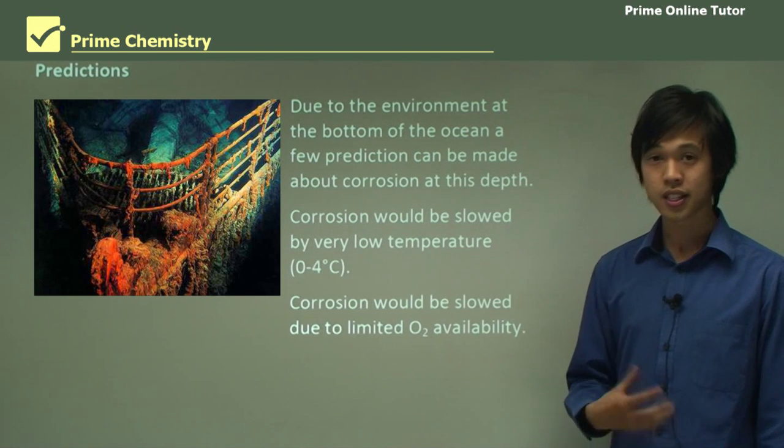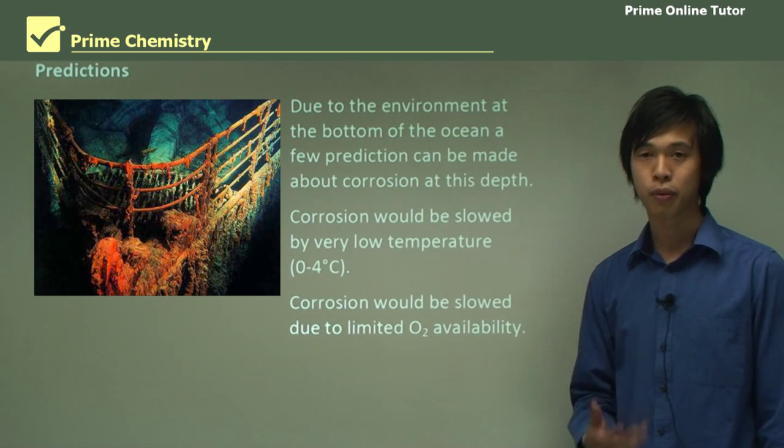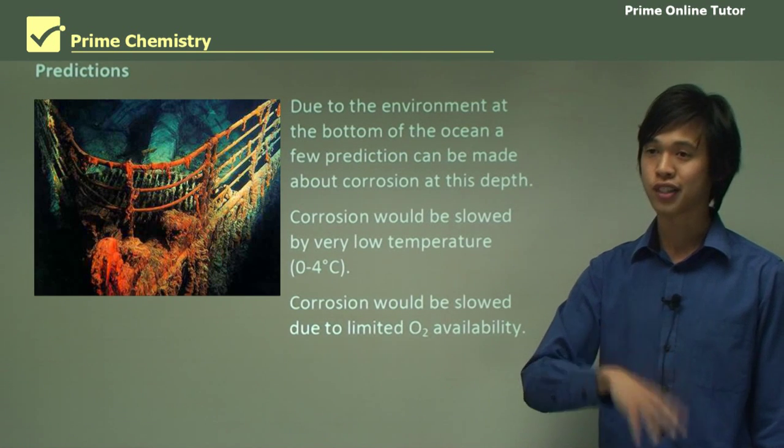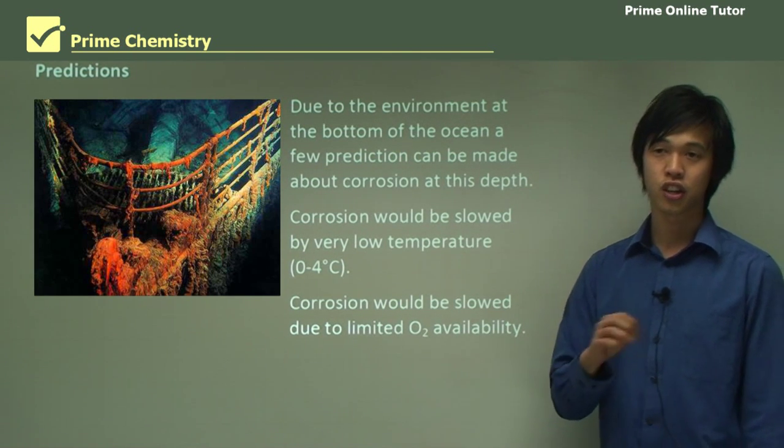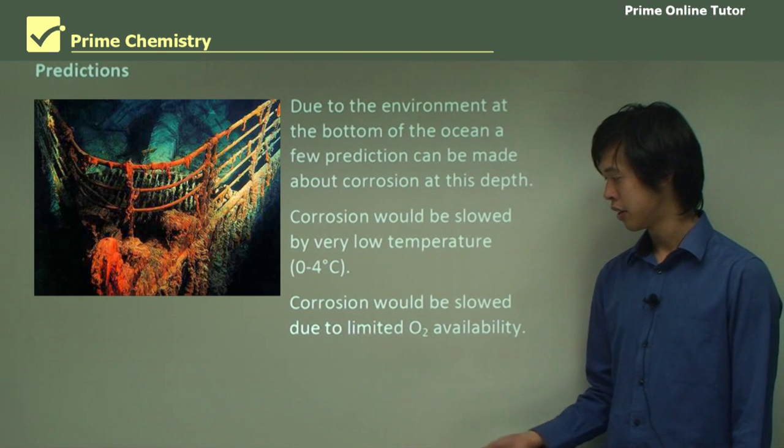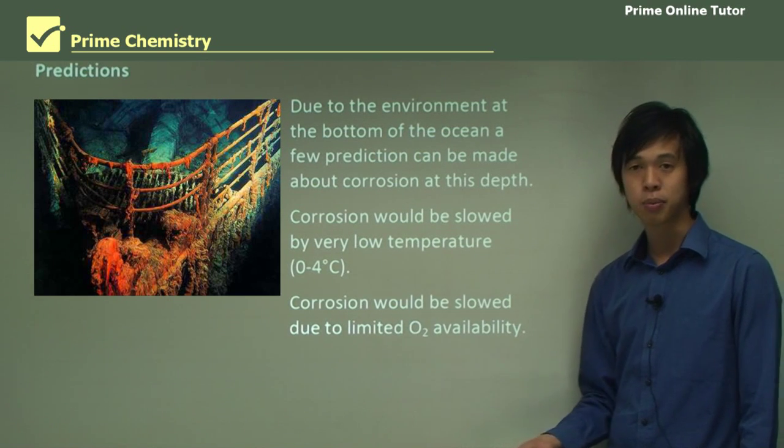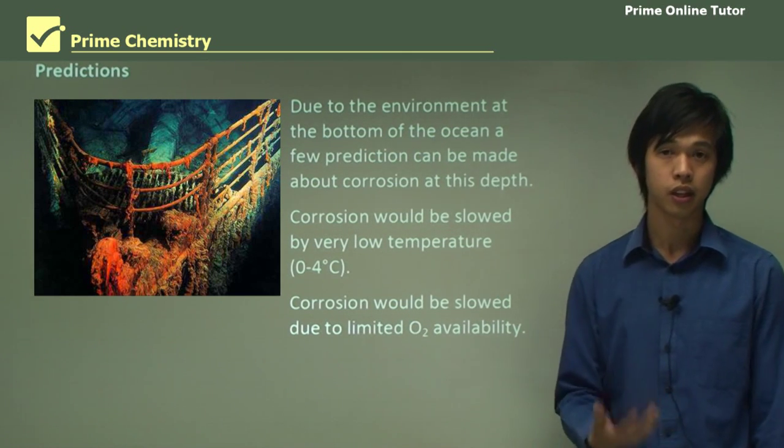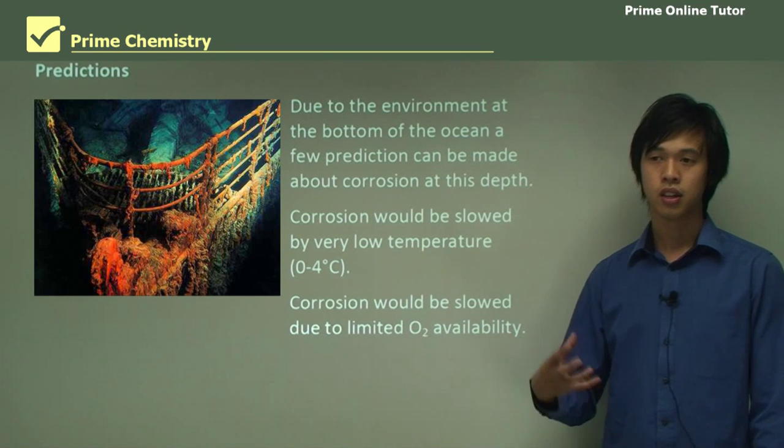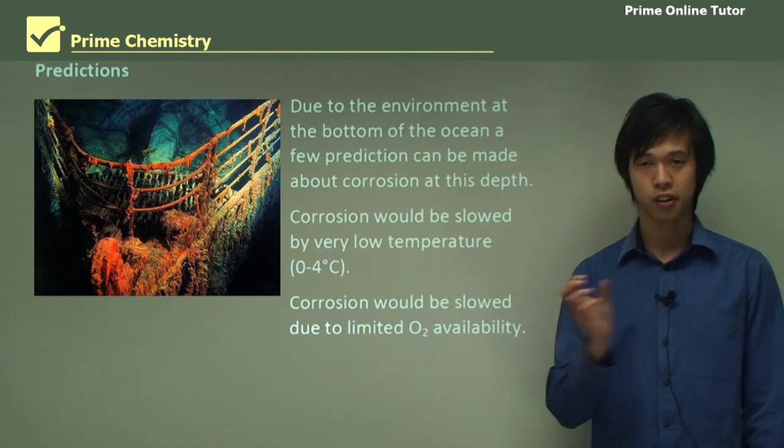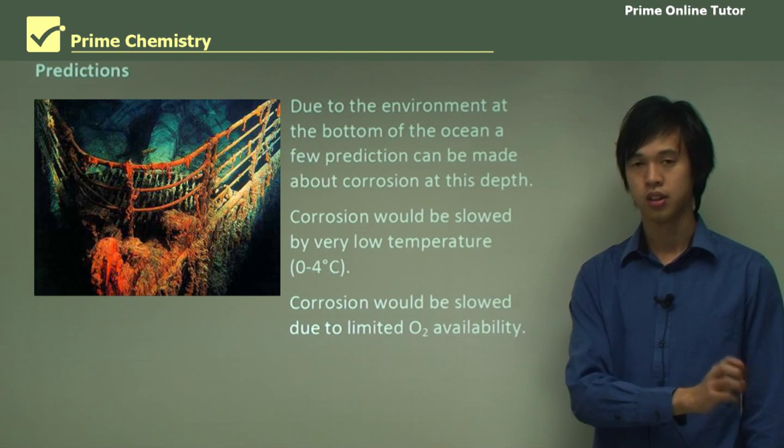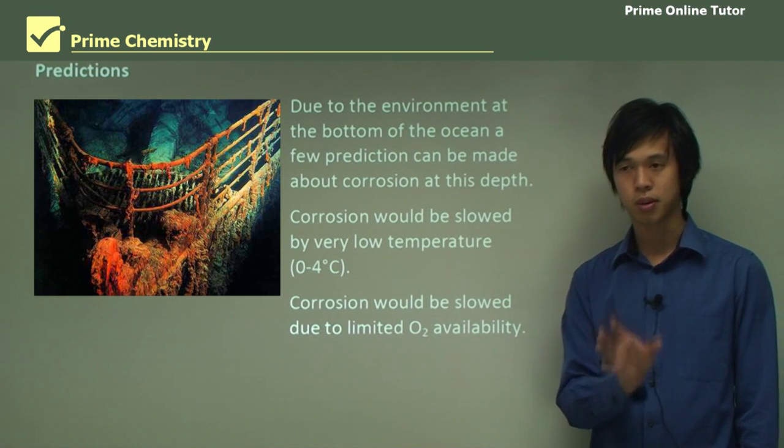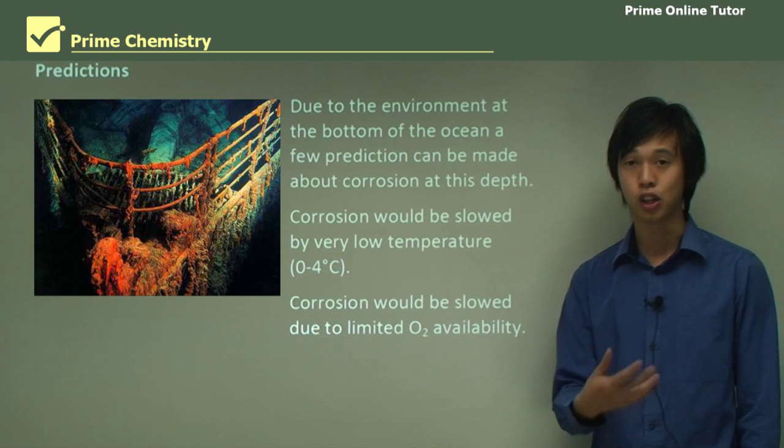And because there's limited O2 availability, remembering from previous lesson we talked about oxygen content and oxygen concentration at depth, because there's limited O2 available, we would also expect corrosion to be low, because oxygen is one of the main contributors to corrosion in metals. So we want oxygen to be low if we want low corrosion.